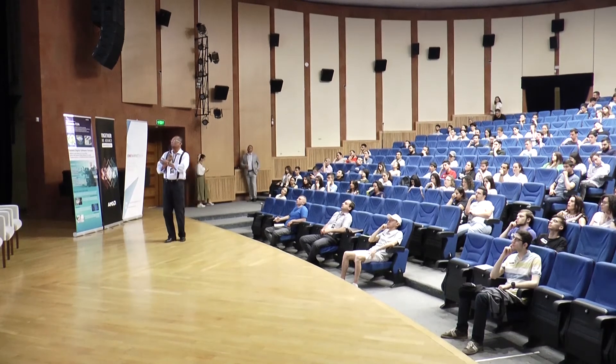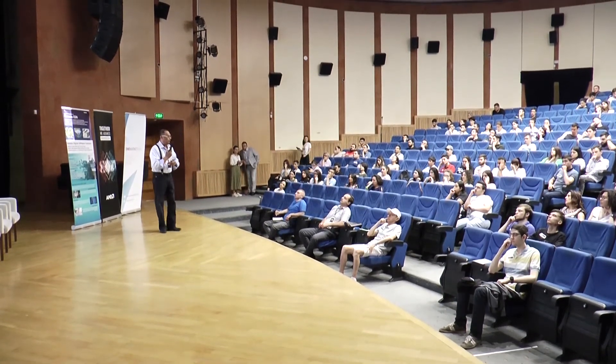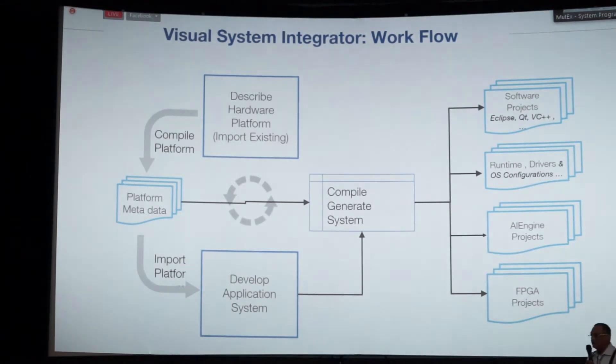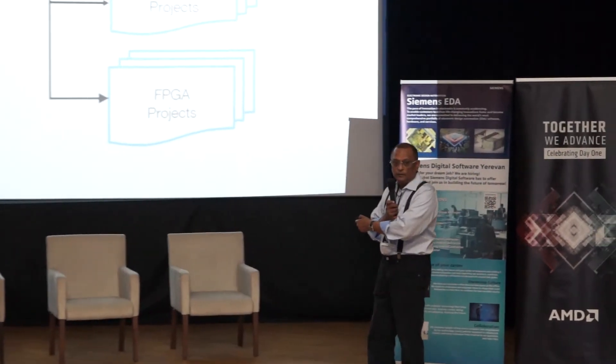The user comes in and describes the hardware platform — say, an FPGA and an x86 connected over PCIe — then says compile platform, and we create some meta information. They then develop the application on a canvas based on that platform, placing different blocks on different components to specify what executes where. Then they say compile/generate system, and we generate FPGA projects for the FPGA portions, AI engine projects, software projects, as well as all the runtime and device drivers required to transfer data between them.